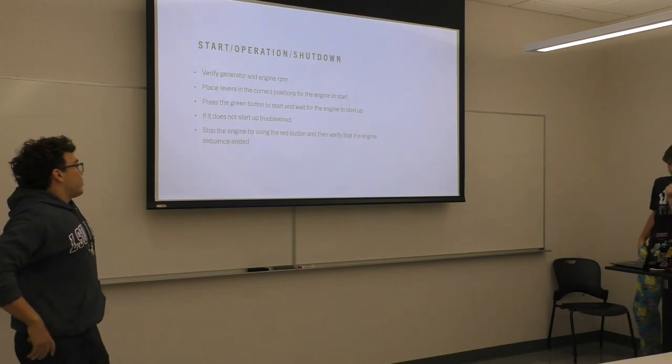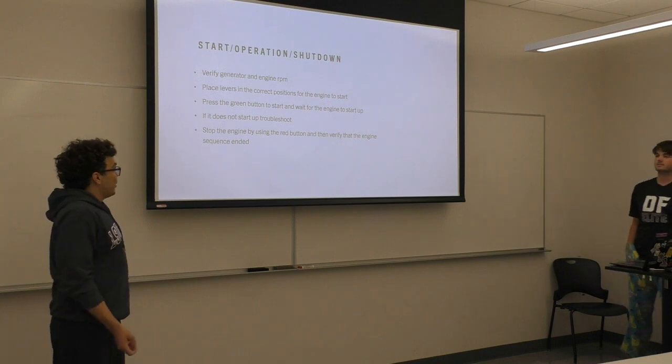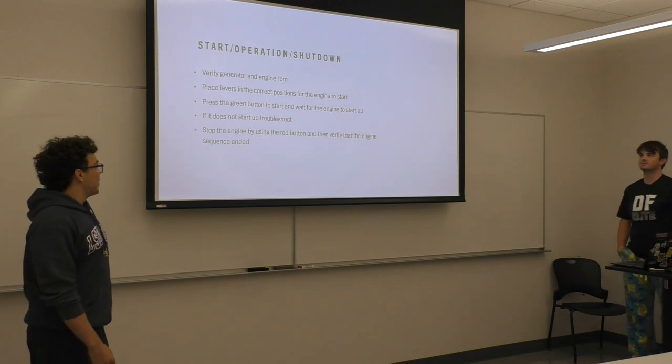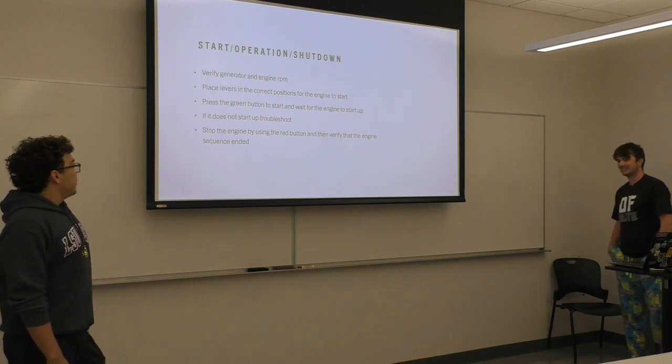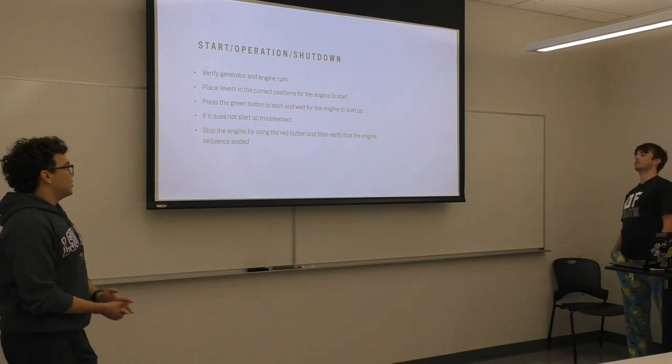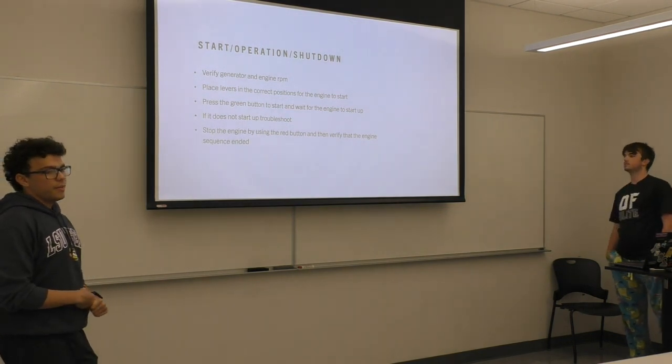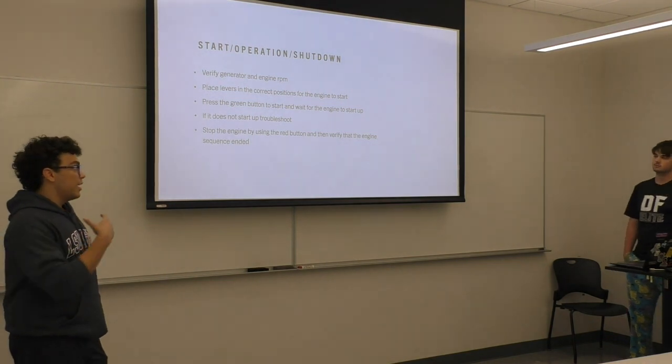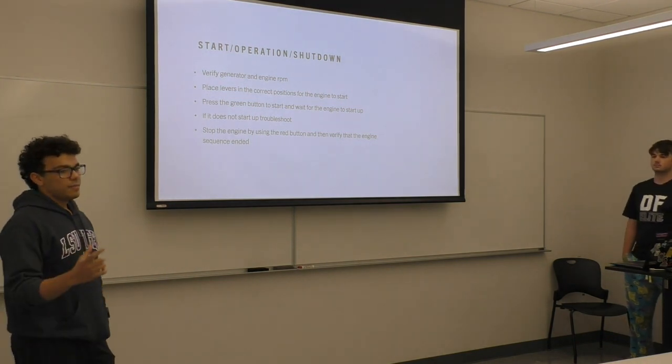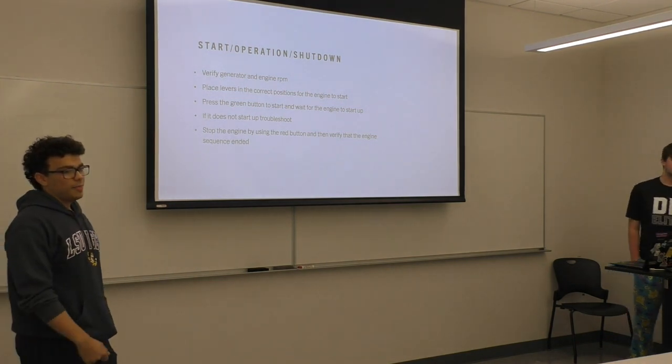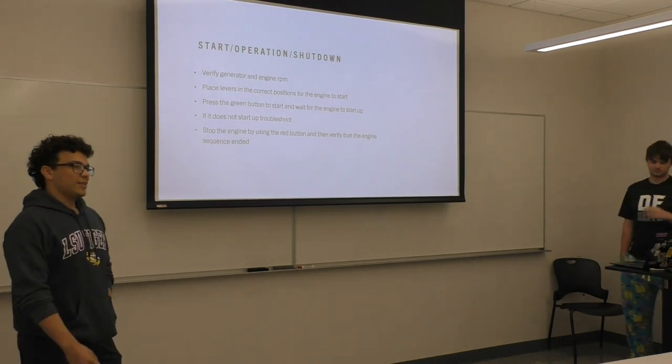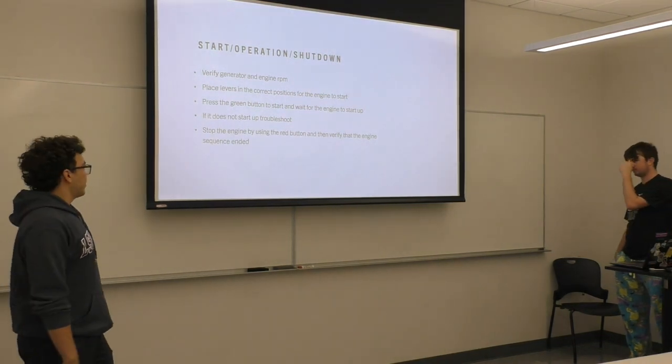The next part is the start operation shutdown. So this is where you actually start it by pressing the big green button. You basically verify the engine and generator at the correct RPM. There's a bunch of constraints, like I know on another slide, it shows the max RPM, the min RPM that operates. And if it's passed or lower than that, then something's probably wrong.